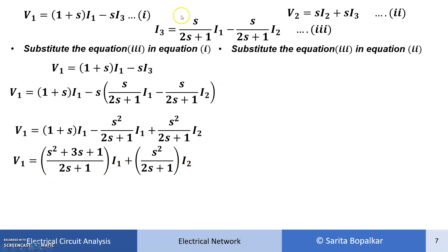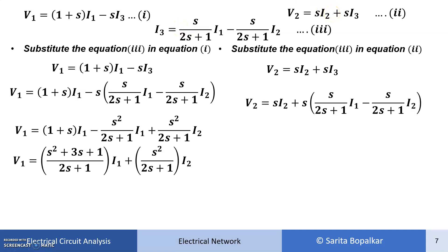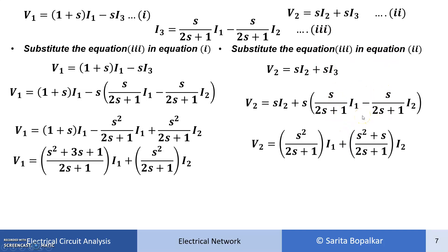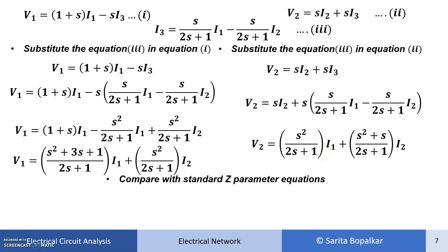Similarly, we substitute I3 into equation 2. Taking S inside and solving, then combining the I2 terms, we obtain V2 expressed in terms of I1 and I2. Now we can compare these two equations with the standard Z parameter equations.